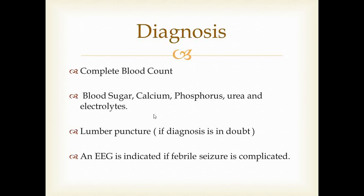For diagnosis, a good history and clinical examination are essential. After assessing and ruling out meningitis clinically, investigations include complete blood count — especially total leukocyte count — blood sugar, calcium, phosphorus, urea, and electrolytes. If blood sugar is low, give a bolus of dextrose; if calcium or electrolyte imbalance is present, correct it. Lumbar puncture is done if the diagnosis is in doubt.